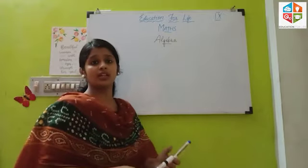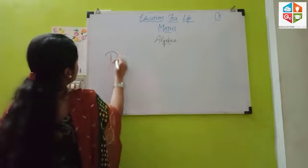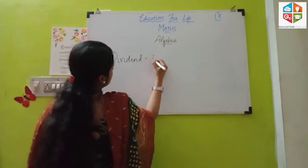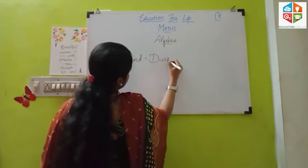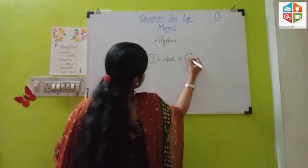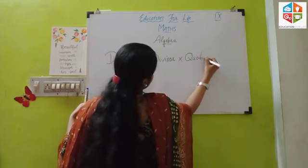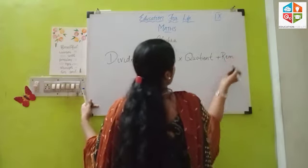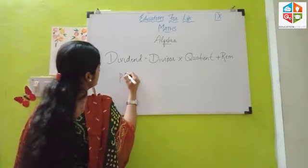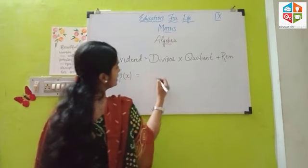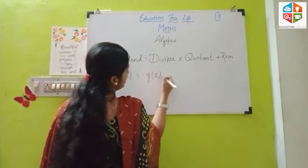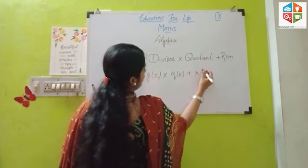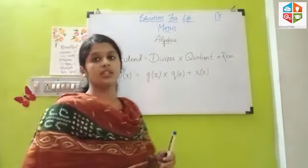We all know the general concept. Dividend is equal to divisor into quotient plus remainder. For instance, if you want P of X to be the dividend, since it is a polynomial, let us take the divisor to be G of X, Q of X plus R of X. This is the division rule.